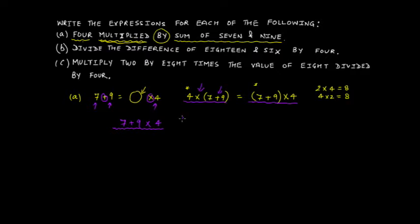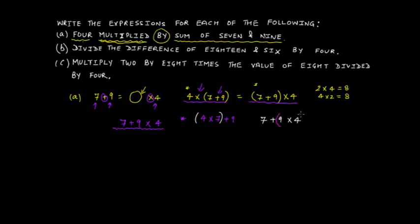Now, the second case — what if someone changes the position of the bracket? Instead of using the bracket with 7 and 9, they use it for 9 and 4, writing 7 plus (9 multiplied by 4). If you solve all three versions, you will get three completely different answers.